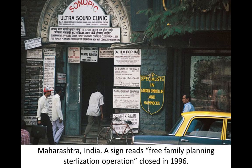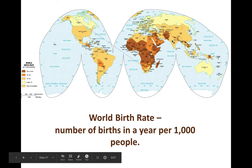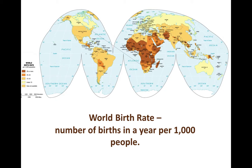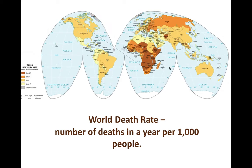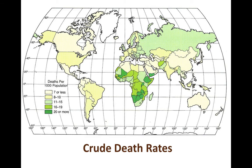Here is a sign for free family planning sterilization operations from 1996 — sterilization was offered as a birth control option. On the map, India's birth rate doesn't look as extreme because of these concerted efforts. Looking at death rates, most deaths occur where medical infrastructure is limited. To clarify key terms: the death rate is the number of deaths per 1,000 per year; the birth rate is the number of births per 1,000 per year; the fertility rate is the number of children per woman of childbearing age; and the dependency ratio is the number of people too young or too old to work.